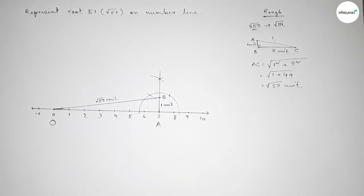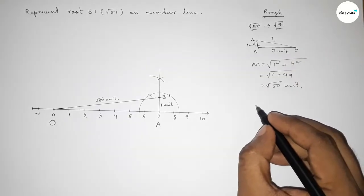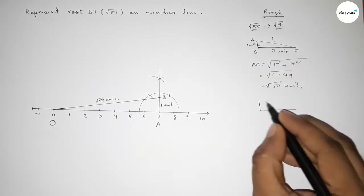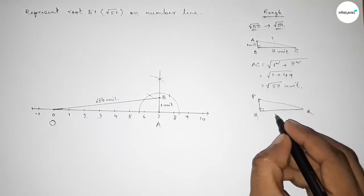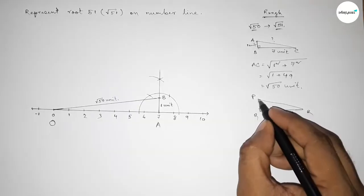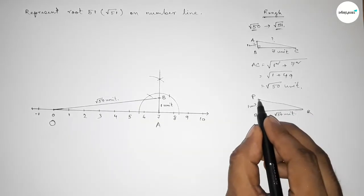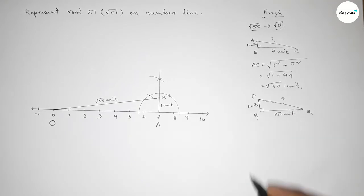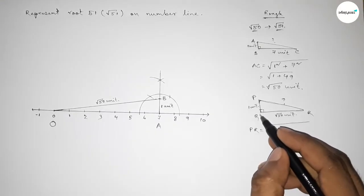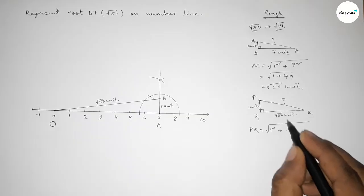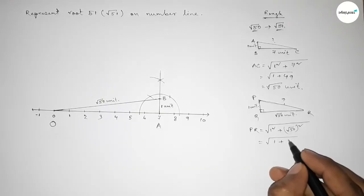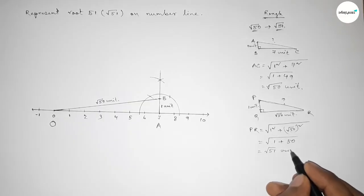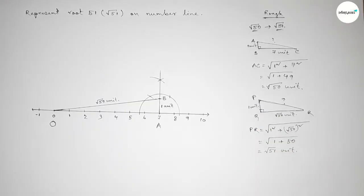Next, representing root 51 using root 50. Drawing a right angle triangle PQR with base equal to root 50 units and perpendicular equal to 1 unit. By Pythagoras theorem, hypotenuse PR equals root over 1 squared plus root 50 squared, which is root of 1 plus 50, so PR equals root 51 units.